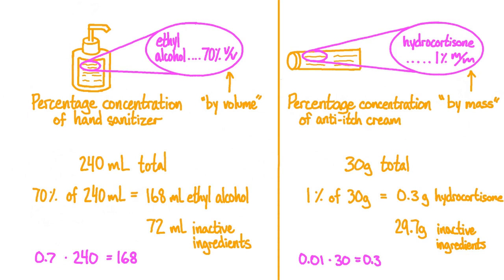For the most part, these inactive ingredients give the cream its creamy texture, allowing the hydrocortisone to be applied to the skin. As we can see, the math involved in these two situations is basically the same. The main difference is whether we use units for volume or units for mass.